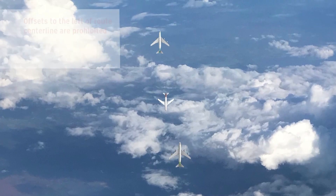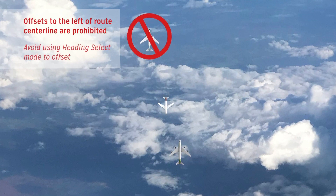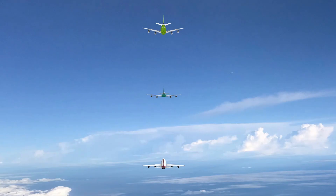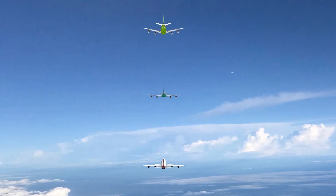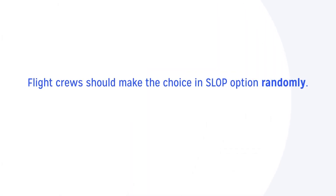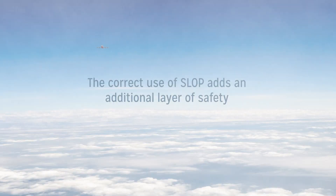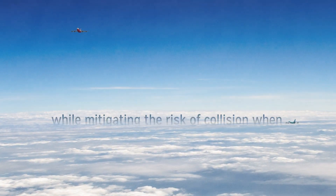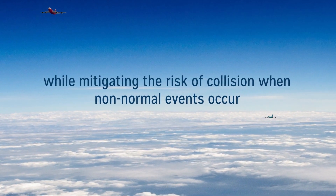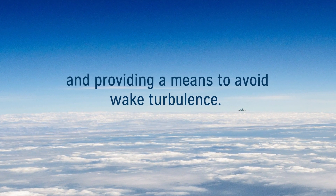4. Offsets to the left of route centerline are prohibited. Avoid using heading mode to offset. Choice of centerline or offset up to two nautical miles right must be randomly selected on every flight by the flight crew. Do not choose the same option on every flight. In summary, the correct use of SLOP adds an additional layer of safety while mitigating the risk of collision when non-normal events occur and providing a means to avoid wake turbulence.